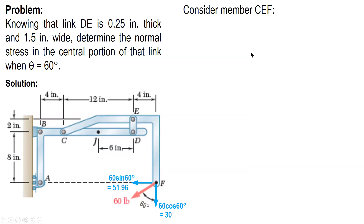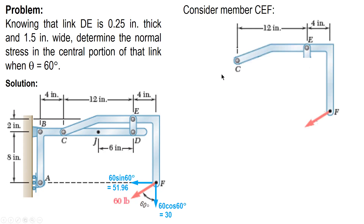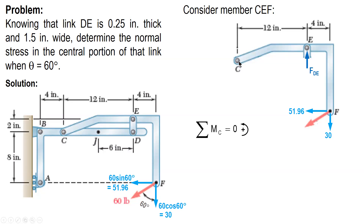Let's consider member CEF and sum up moments at C. When the 60-pound force is applied, link DE will be compressed. The distance of FDE is 12, the distance of 51.96 is 8, and the distance of 30 is 16. FDE is counterclockwise, 51.96 is clockwise, and 30 is clockwise also.